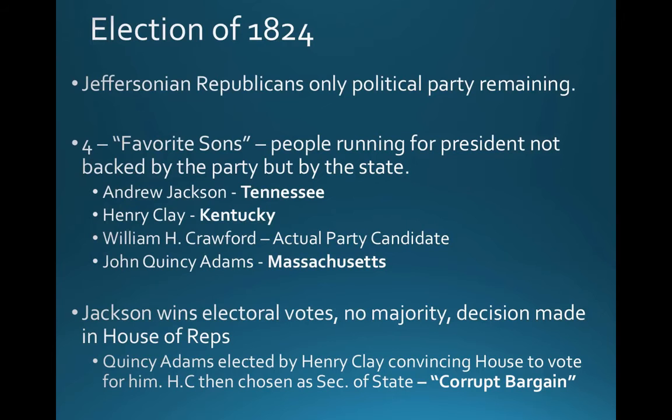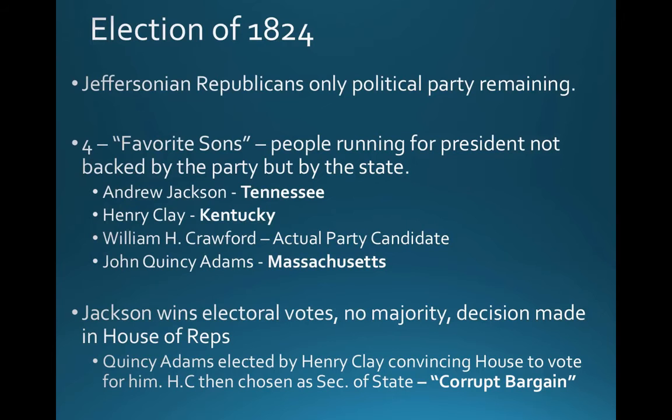By 1824, only one political party remained after the demise of the Federalists — the Democratic-Republicans, aligned with Jeffersonian ideals. Four different people ran for president, not all backed by the party itself — some backed by their own states. The candidates were Andrew Jackson representing Tennessee, Henry Clay representing Kentucky, John Quincy Adams representing Massachusetts, and the actual party candidate, William H. Crawford.